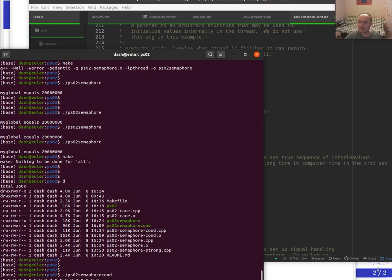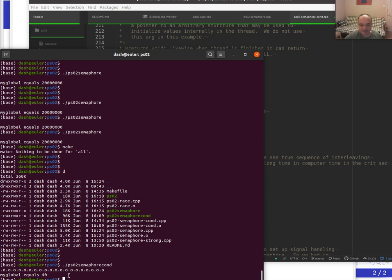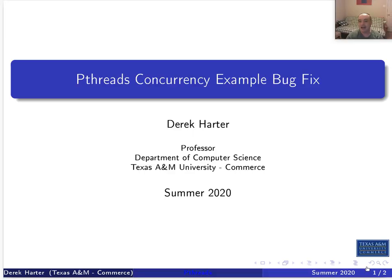That's basically it for this video — that's how you fix the concurrency bug we first saw in problem set two. I hope that helps you understand how semaphores and mutual exclusion mechanisms work. That's it for this video, and I'll see you in the next one. Thank you.